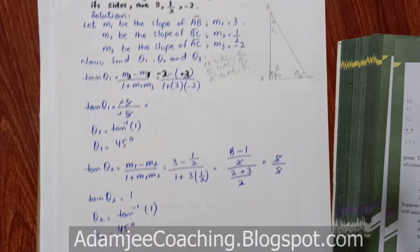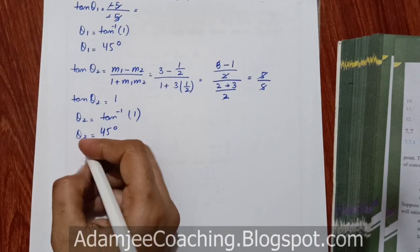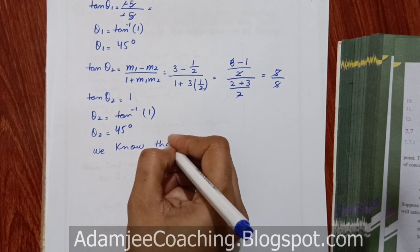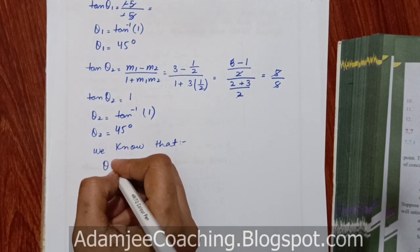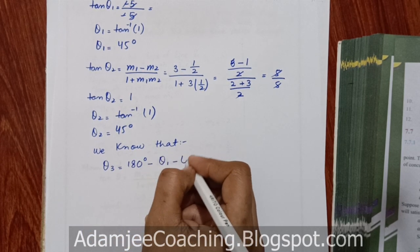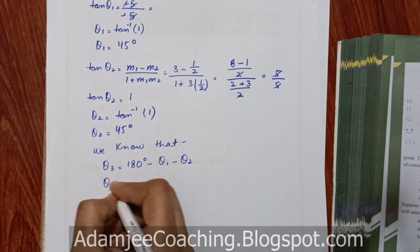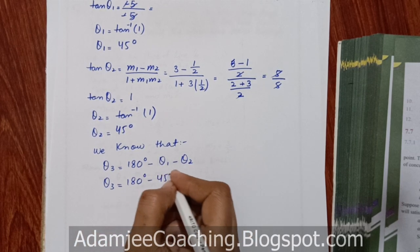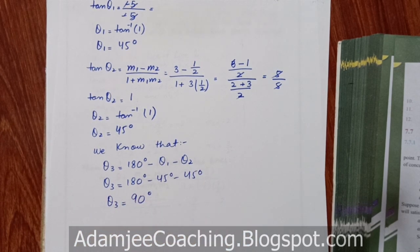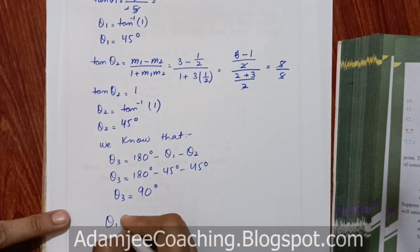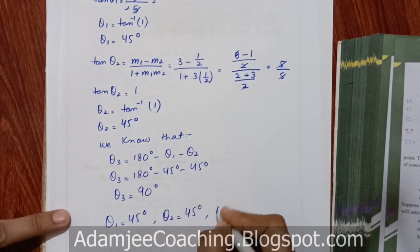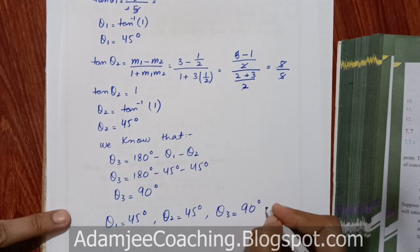Both angles Theta1 and Theta2 came out to be 45 degrees. We know that the sum of all angles in any triangle equals 180 degrees. So Theta3 = 180 − 45 − 45 = 90 degrees. Therefore Theta1 = 45°, Theta2 = 45°, and Theta3 = 90°.